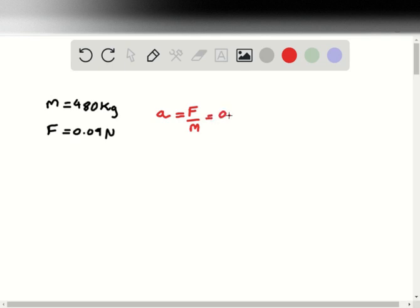And simply that is our two figures: 0.09 divided by 480. And this is going to be absolutely tiny, of course. This is 1.875 multiplied by 10 to the minus 4—that's to the minus 4—meters per second squared.